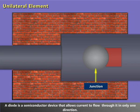A diode is a semiconductor device that allows current to flow through it in only one direction.